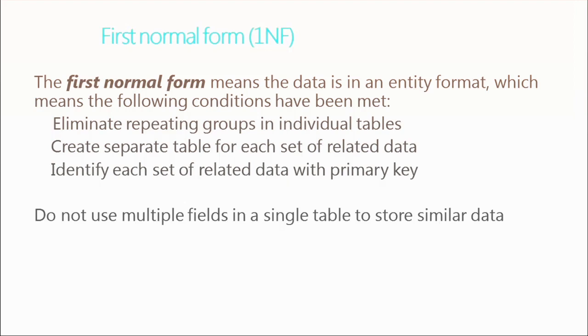First normal form means the data is in entity format, with all conditions met: we've eliminated any repeating groups, we create a separate table for each set of related data — as we talked about with our CDs, creating tables for artists, genres, and different types — and we identify each set of data within a table using what's called a primary key. We don't use multiple fields in a single table to store similar data — that's what a spreadsheet does, and we want to avoid that. We set up relationships between the tables to create that structure.